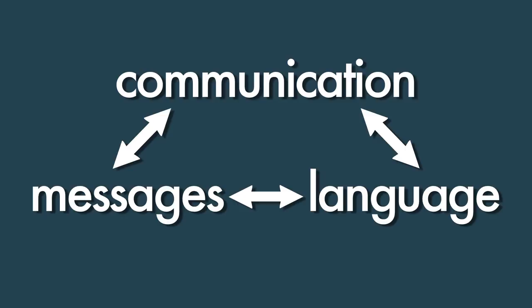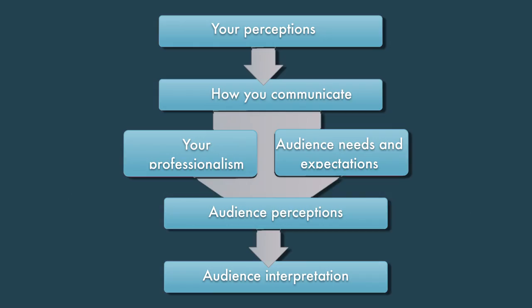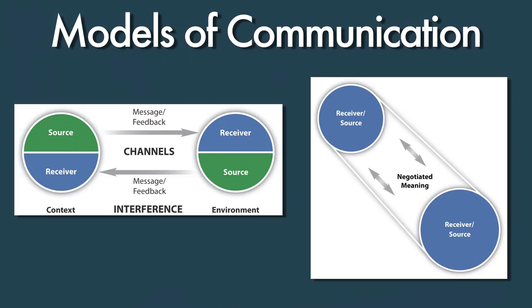Once you understood the processes and messages that create effective communication, you learned that perception is important — how you produce messages and how your audience receives them. The key point from this section was to illustrate why it is always important that the messages you produce reflect your own professionalism as well as the traits of your audience.